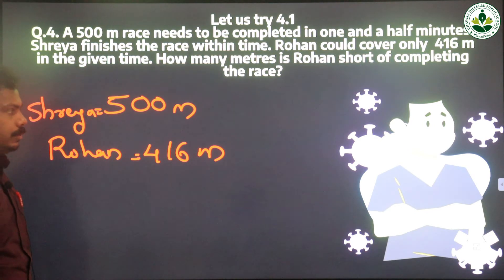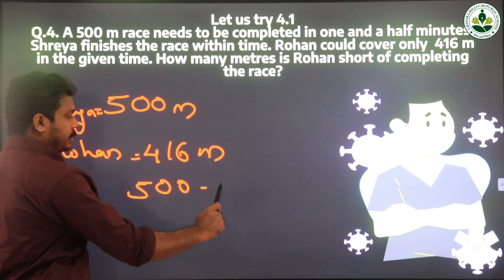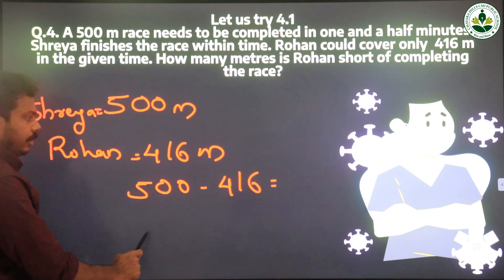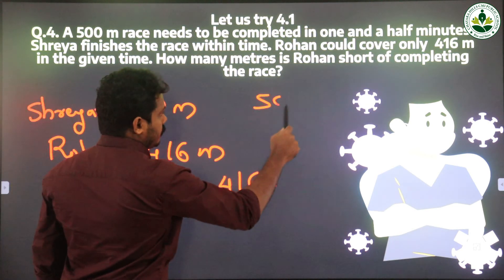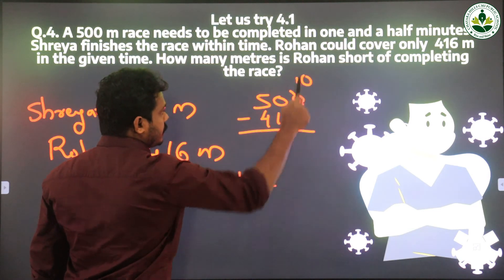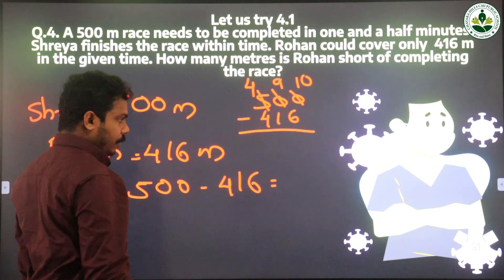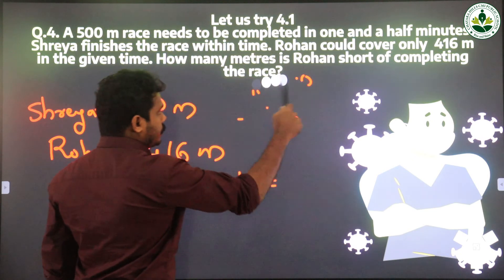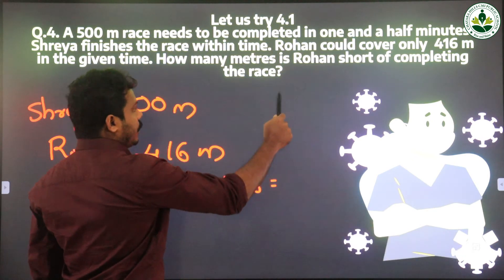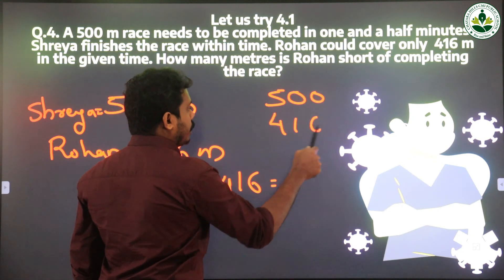We need to subtract 416 from 500: 500 minus 416.